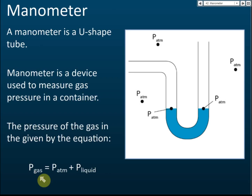Before using the manometer, there are a few important things to know. The first is that the pressure of a gas is the same at different levels if the height difference is not large. For example, at various points in the container — even though one point is higher and another is lower — the pressure is the same. This only changes for very large height differences, like comparing sea level with highland areas.